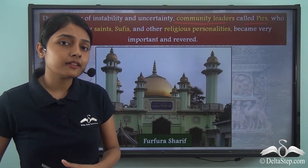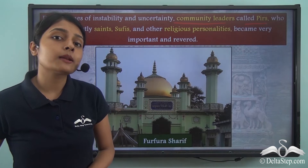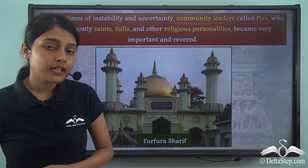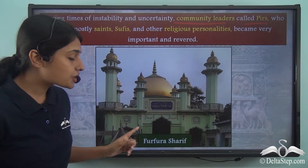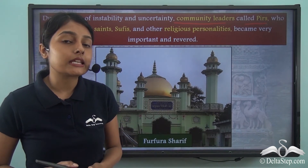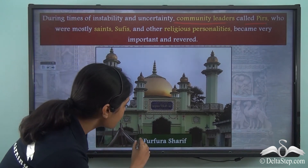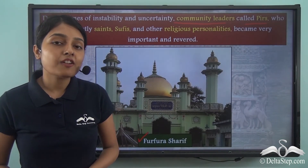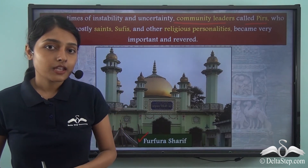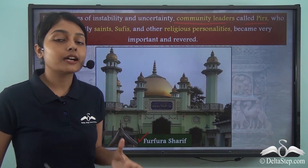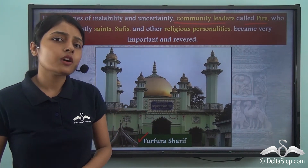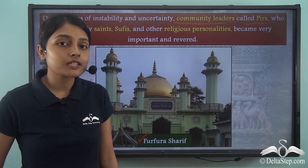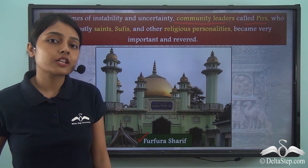Now after the death of these Peers, they were worshipped in the shrines or Majars. One very popular shrine that can be found in the present day Indian state of West Bengal is known as Furphuda Sharif. Now Furphuda Sharif is the second most popular Darga in India after Ajmer Sharif in Rajasthan. And it was not just this shrine or Darga — many new shrines sprang up in order to provide peace and security to the distressed people who had to migrate from one region to another.